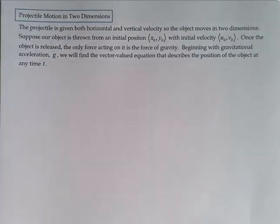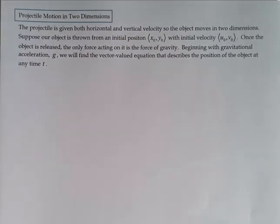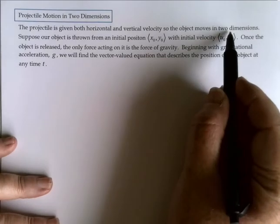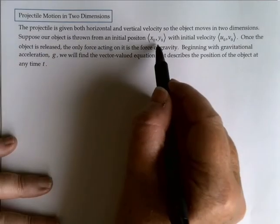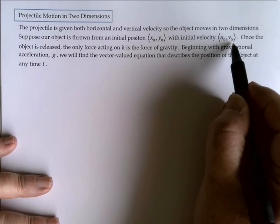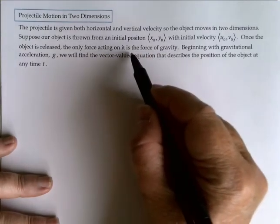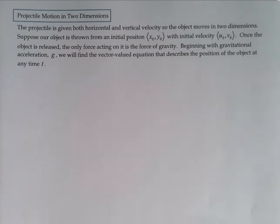On our next page, we're going to start from scratch. Let's imagine we have a projectile given both horizontal and vertical velocity — the typical way you might throw a ball. The object is going to move in two dimensions. We'll assume our object is thrown from an initial position x-naught, y-naught and is given an initial velocity u-naught, v-naught. Once the object is released, the only force acting on it is the force of gravity. If there's another force acting, we usually need three dimensions — we'll stick with two for right now.